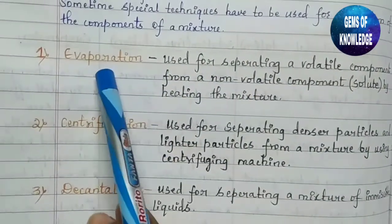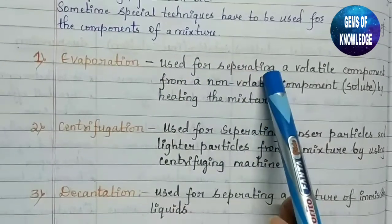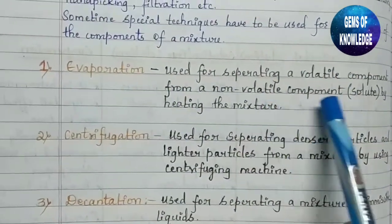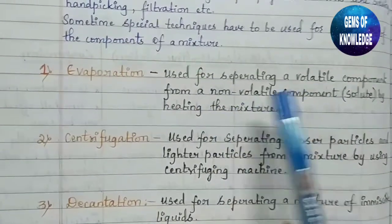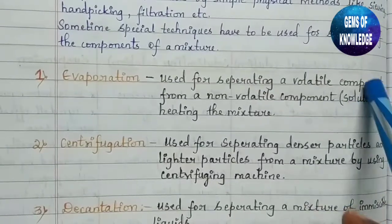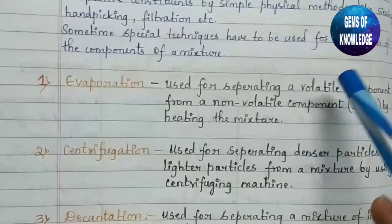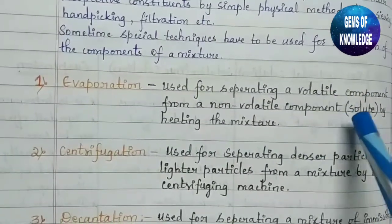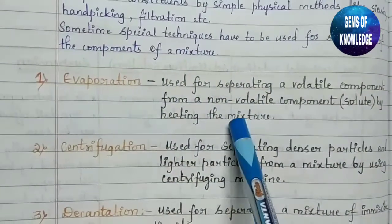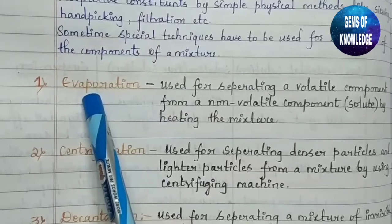The first technique is evaporation. Evaporation is used for separating a volatile component from a non-volatile component by heating the mixture. Here we use two components — one is the solute and the volatile component is the solvent. One will be evaporated and the other will be left behind. This process is called evaporation.